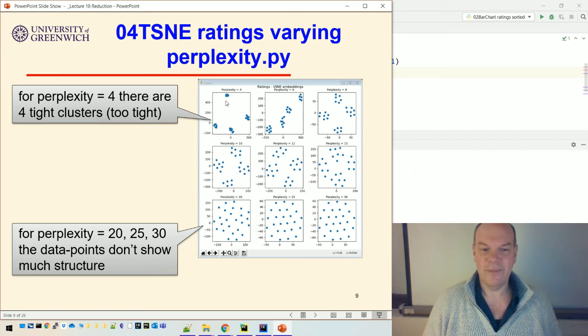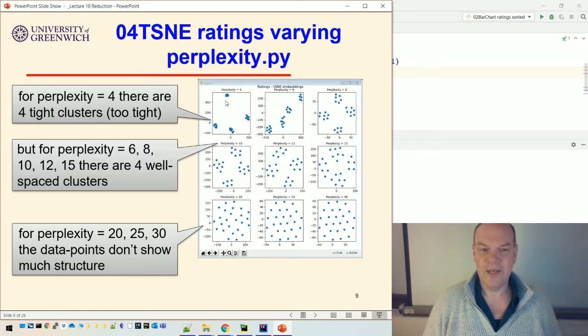25, 30, they don't show much structure. So somewhere in the middle there, any of these particular values, 6, 8, 10, 12, 15, there's four well-spaced clusters, which kind of matches what we knew from k-means. Okay. So that may be helpful in determining what our data is showing us.